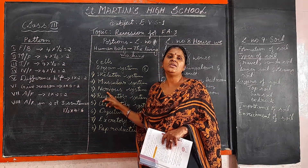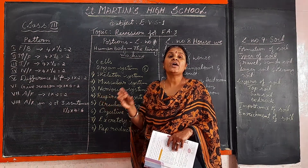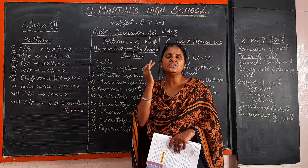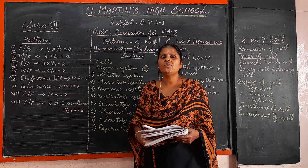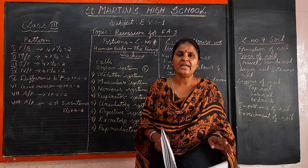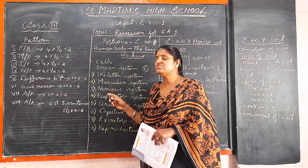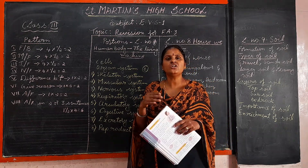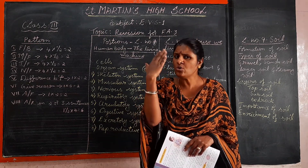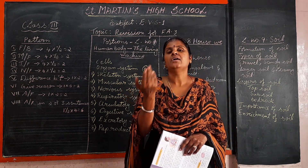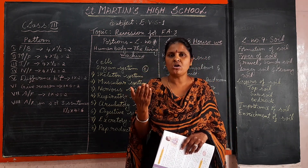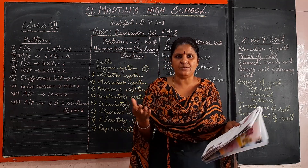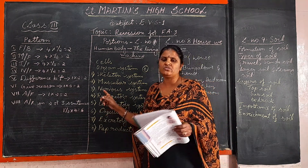We have five sense organs in the nervous system: eyes, nose, ears, tongue, and skin. Eyes help us to see; nose helps us to smell; tongue helps us to taste; ears help us to hear; skin helps us to feel. You should practice the sense organ diagrams also.